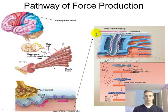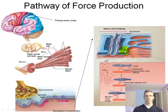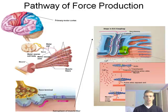The action potential travels down and hits a T-tubule. The T-tubules are close to the sarcoplasmic reticulum, which is important because the sarcoplasmic reticulum holds a large amount of calcium. The action potential travels down the muscle, excites the sarcoplasmic reticulum, and that causes the SR to release a lot of calcium.